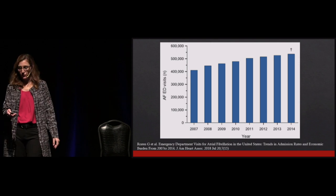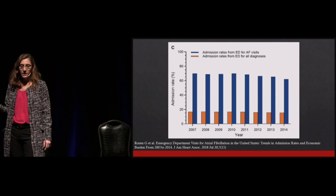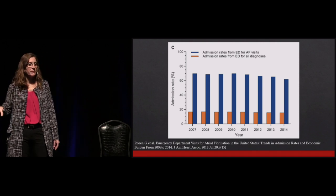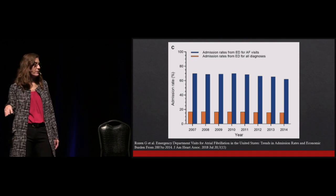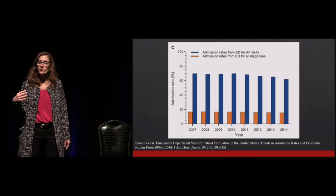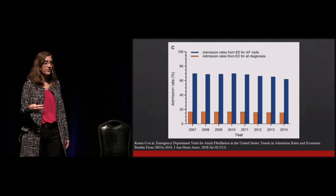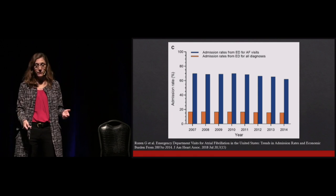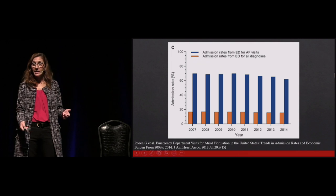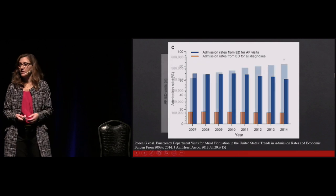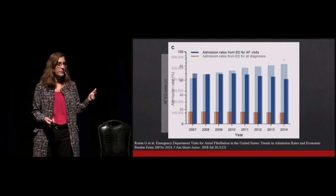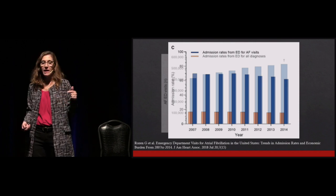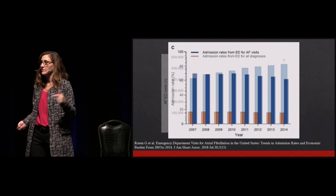Here's the really interesting part. The orange bars indicate the percent of admissions for all patients with any chief complaint coming to the ED — pretty steady over many years. The blue is the percent of patients admitted with a chief complaint related to AFib — significantly higher than all comers, around 70%. But it's going down. So the number of patients coming to the ED is going up while the number being admitted for AFib is going down. AFib is becoming an outpatient disease.